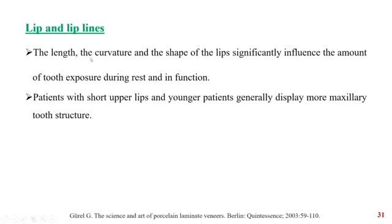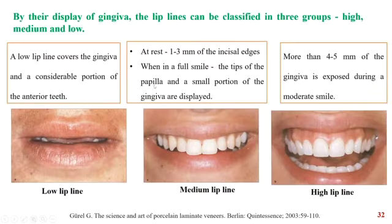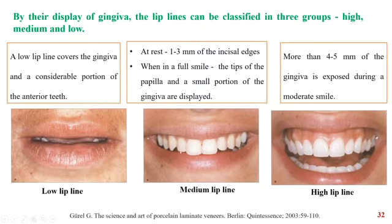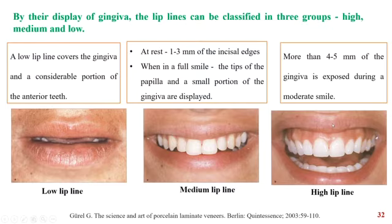Coming on to the lip and lip lines, the length, curvature, and shape of the lip also influence the amount of tooth exposure. Patients with shorter lips and younger patients generally display more maxillary tooth structure. Lip lines are broadly classified into three groups: low lip line, medium lip line, and high lip line. The low lip line covers the gingiva and a considerable portion of the anterior teeth; in a low lip line, there is usually no incisal display at rest, and when the patient smiles completely, there may be 3–4 mm of display. In a medium lip line at rest, there is 1–3 mm of incisal edge display, and in full smile, the total length of the teeth and the interdental papilla are visible. In a high lip line, the entire cervicoincial length plus 4–5 mm of gingiva is exposed.